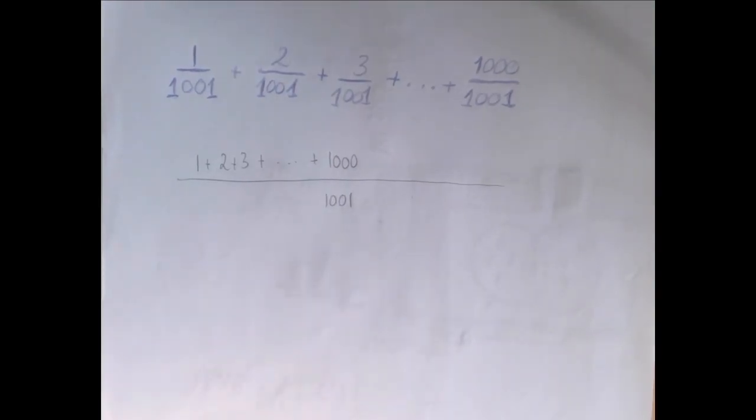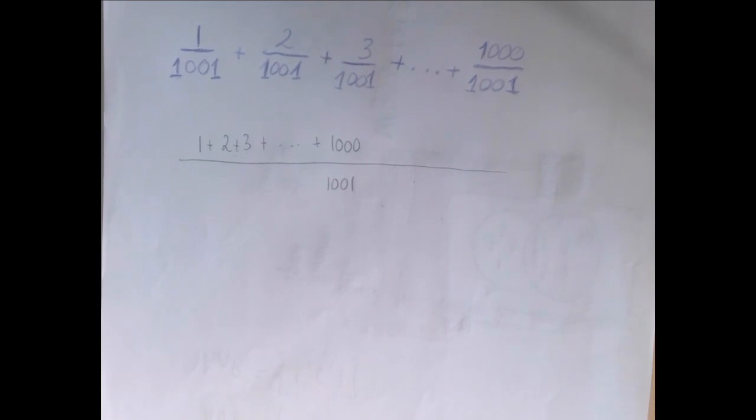And so what's in the numerator is a fairly simple summation. We're going to apply the Gaussian trick. If we write 1 plus 2 plus 3 plus all the way to 1000 and we call that x.